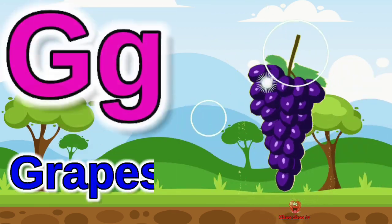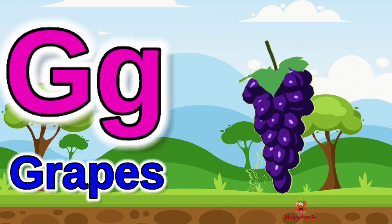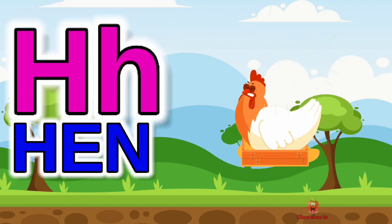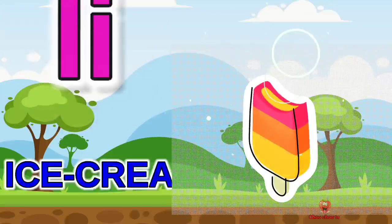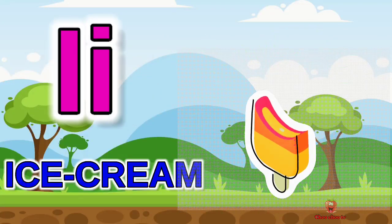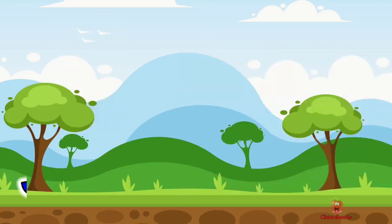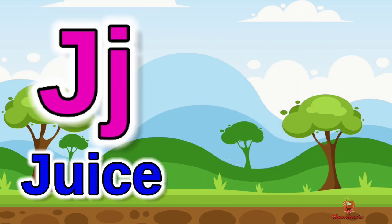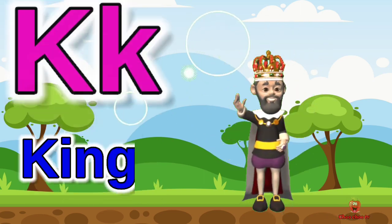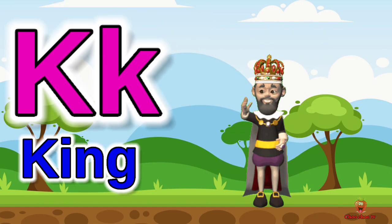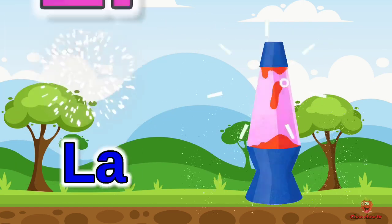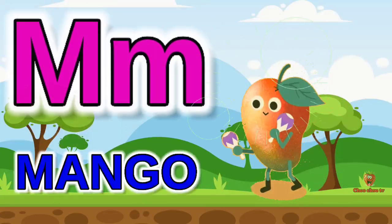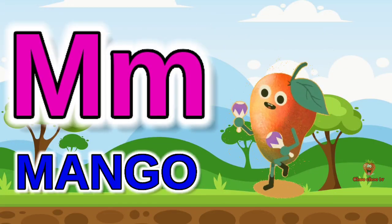G for grapes, H for hen, I for ice cream, J for juice, K for king, L for lamb, M for mango.